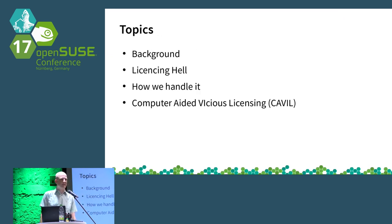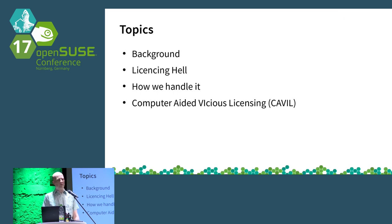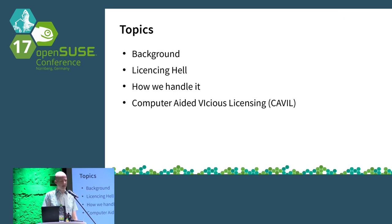The topics of the talk are the whole background of open source licensing, what I describe as licensing hell, and then how we actually handle it within OpenSUSE — the actual process. I will briefly introduce you to the tool we used that we named Computer Aided Vicious Licensing, short CAVL.